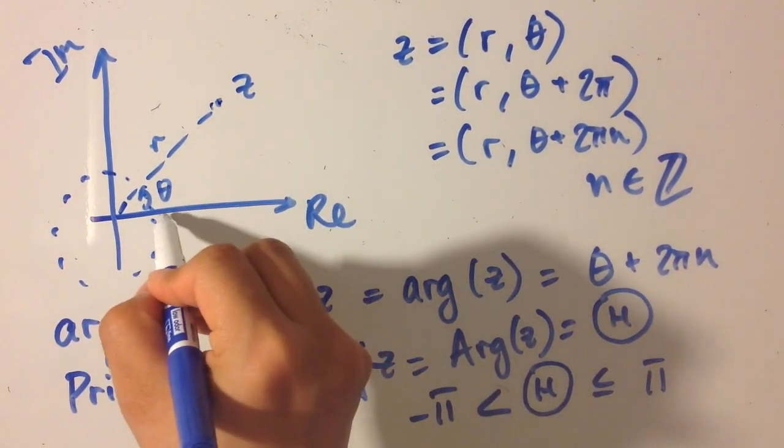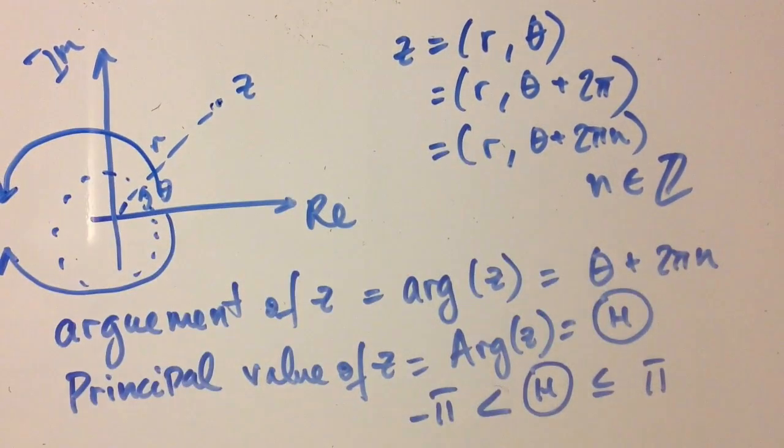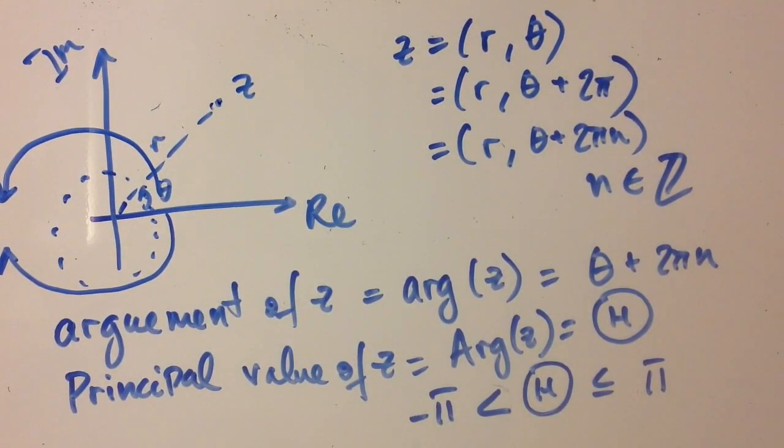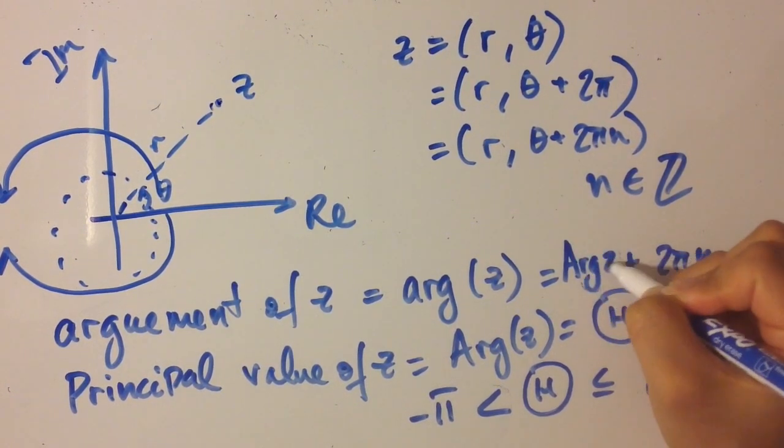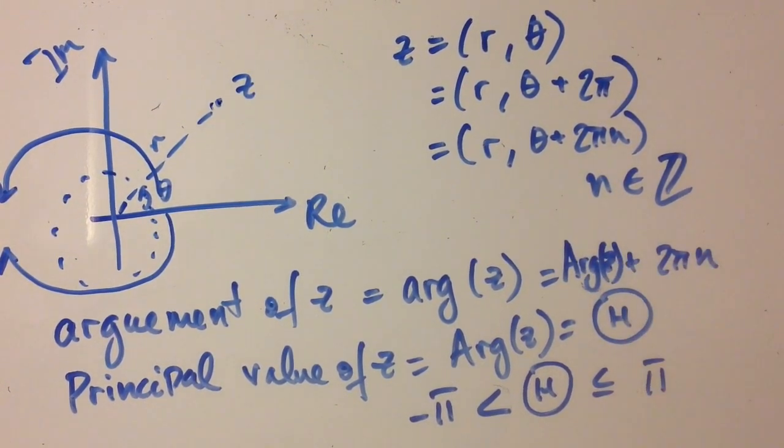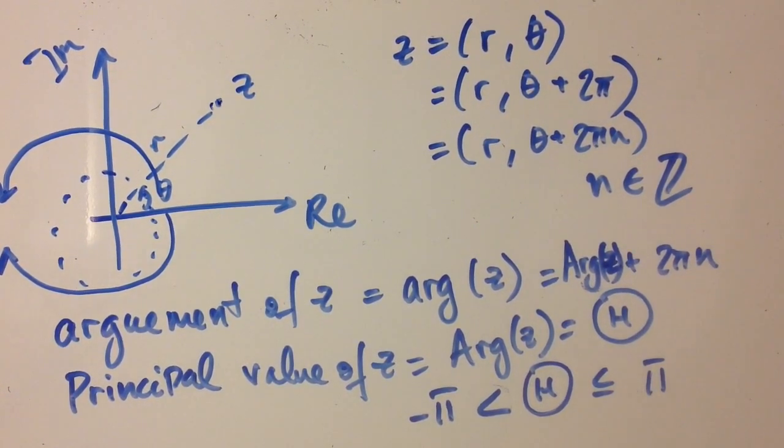So it constricts our theta to lie in this region. So we can rewrite the definition of argument of z in terms of the theta as arg of z where we capitalize the arg to denote the unique value.